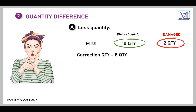The amount for each quantity is 1000. So 10 quantities means the original invoice amount would be 10,000. But actually the invoice amount should be 8,000 — we have to charge 8,000 because 2 quantities are totally damaged. So 10,000 minus 2,000 equals 8,000. We have to charge for 8 quantities only, not 10 quantities. So 2,000 INR will be refunded to the customer by using the invoice correction request.